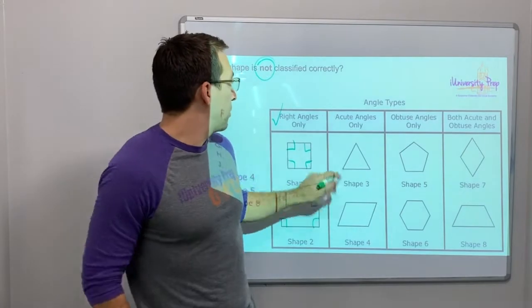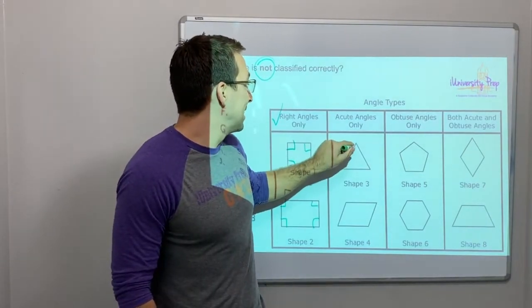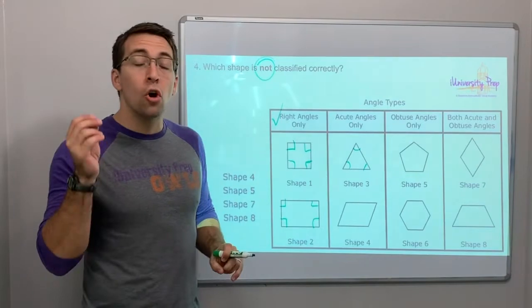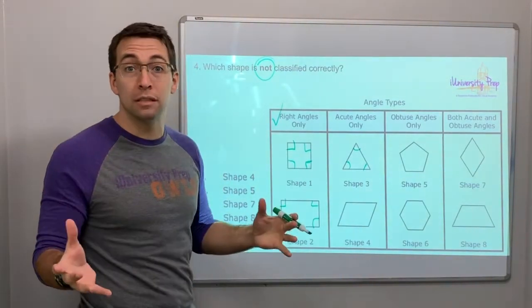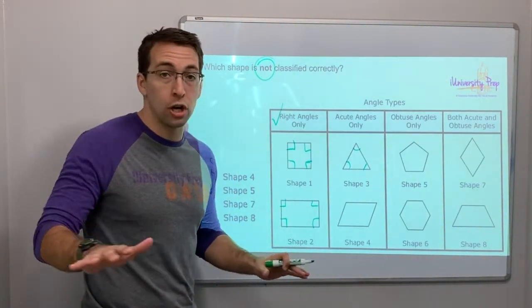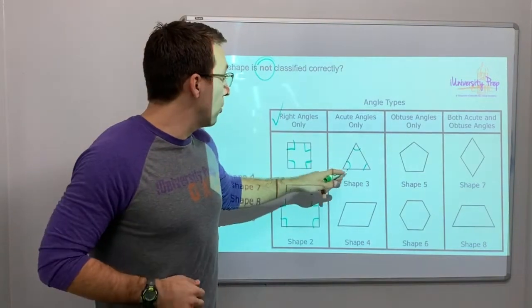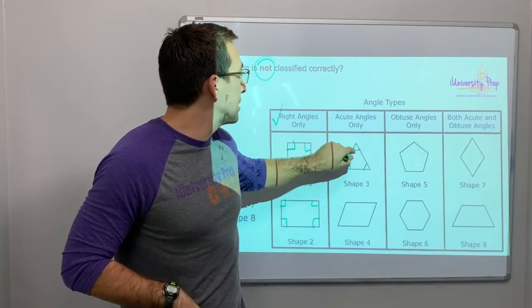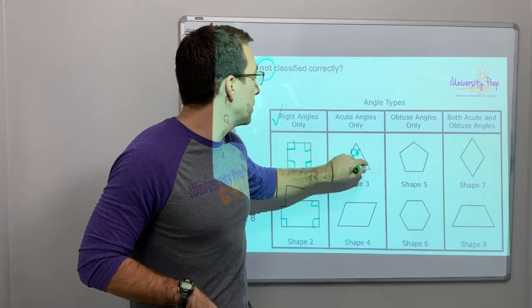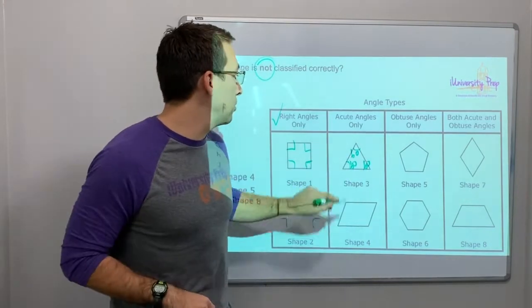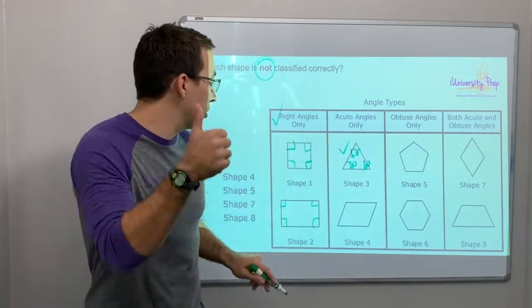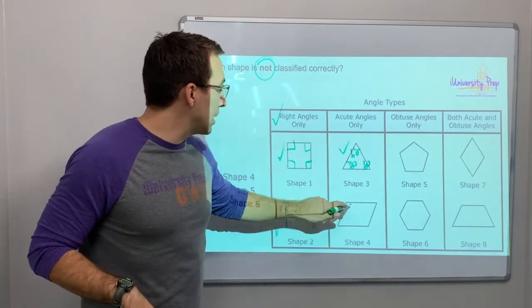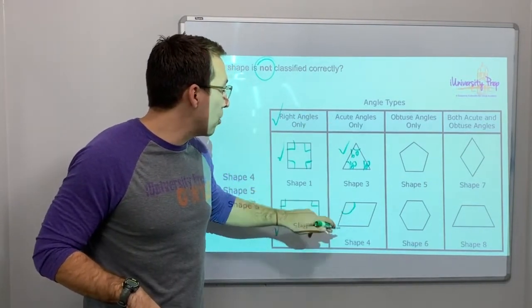Shape three — acute angles only. All triangles have 180 degrees total. If this looks like an equilateral triangle, that's 60 degrees, 60 degrees, and 60 degrees — those are all acute. Shapes one, two, and three are all correct.